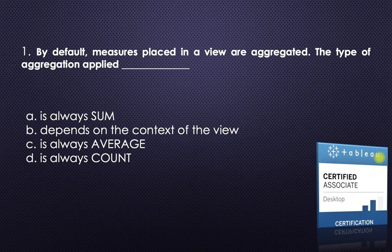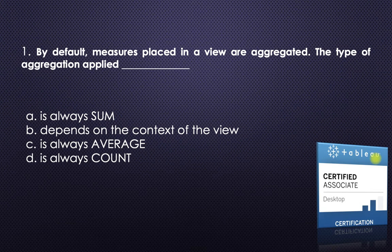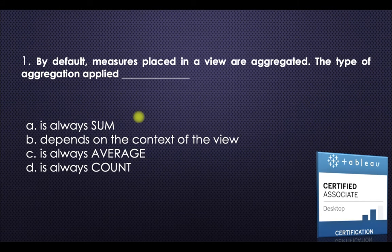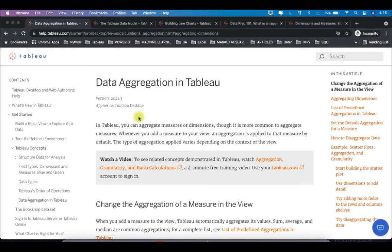The first question is: by default, measures placed in a view are aggregated — the type of aggregation applied is: always sum, depends on the context of the view, always average, or always count. Now if you have used Tableau, you are inclined to answer this as 'always sum', but let me tell you, this is going to be wrong.